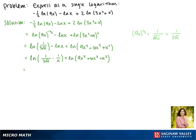Now our first term simplifies to be the natural log of 1 over 3x times the square root of x, and our second term stays the same: the natural log of 9x to the fourth plus 6x cubed plus x squared.